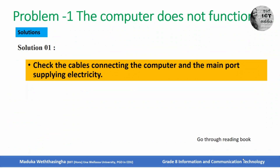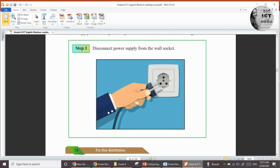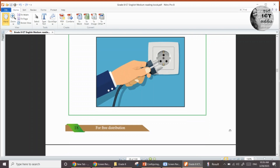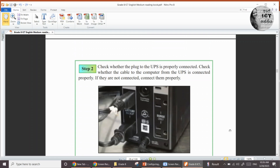Problem 1 — the computer does not function. The solution is to check whether all the cables are connected properly and check the main power supply. First, to check the cable connectivity, disconnect the power supply from the wall socket. After disconnecting the main power supply, check whether the plug to the UPS is properly connected. Then check whether the cable from UPS to the computer is connected properly. If they are not connected, please connect them properly.